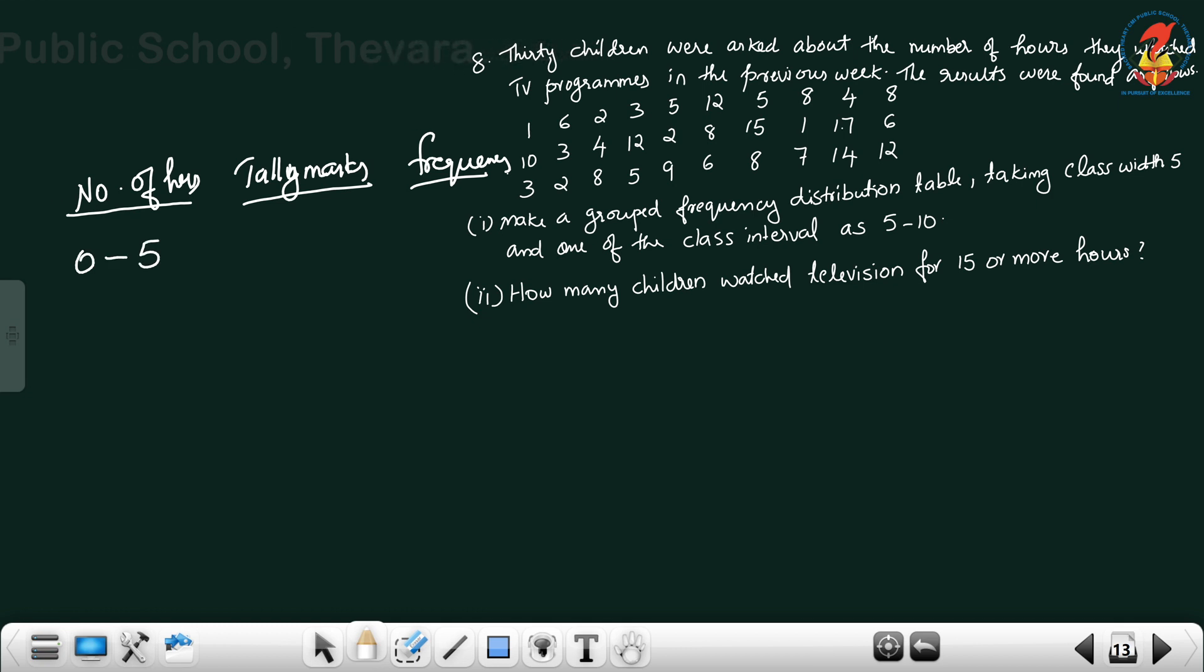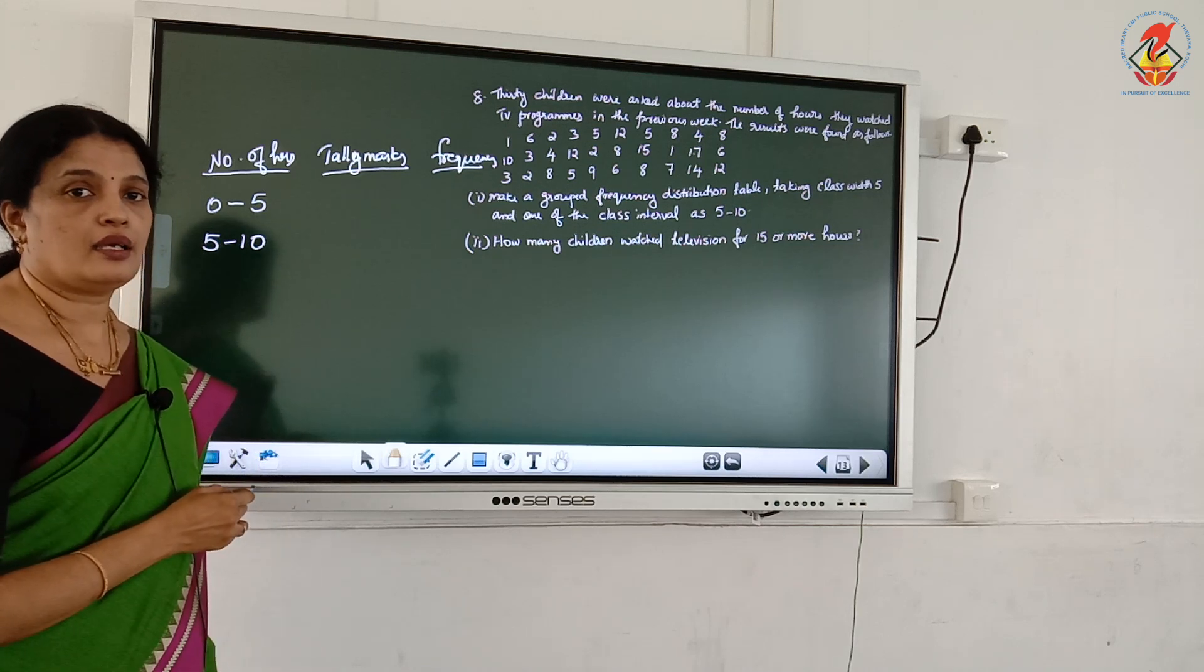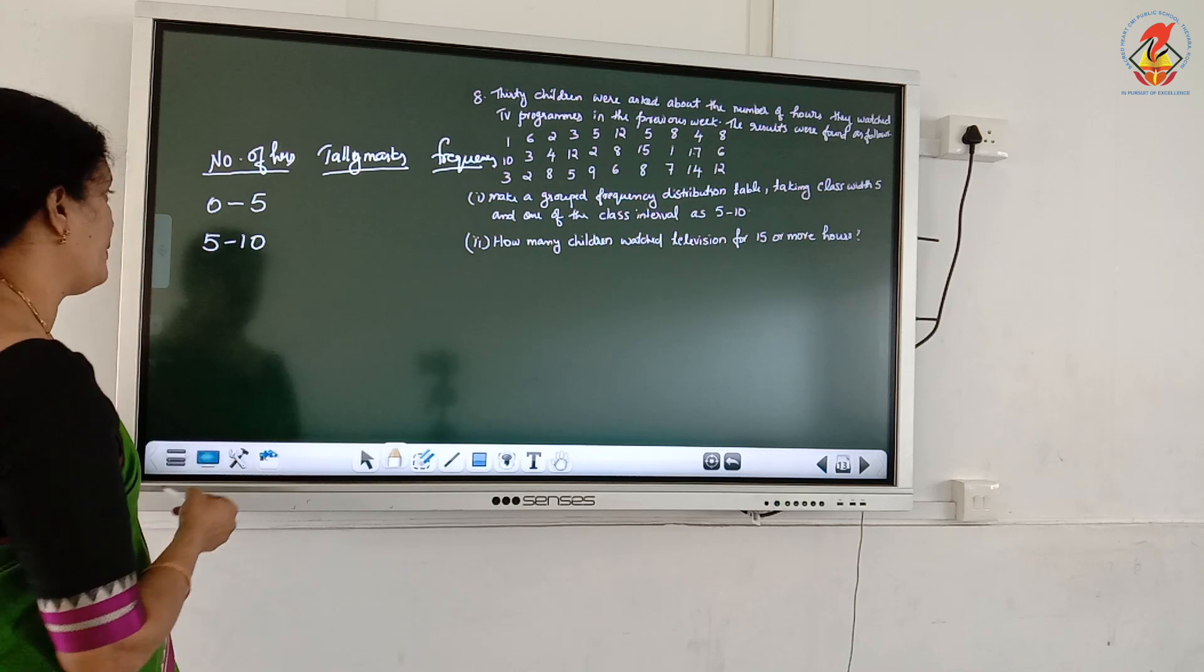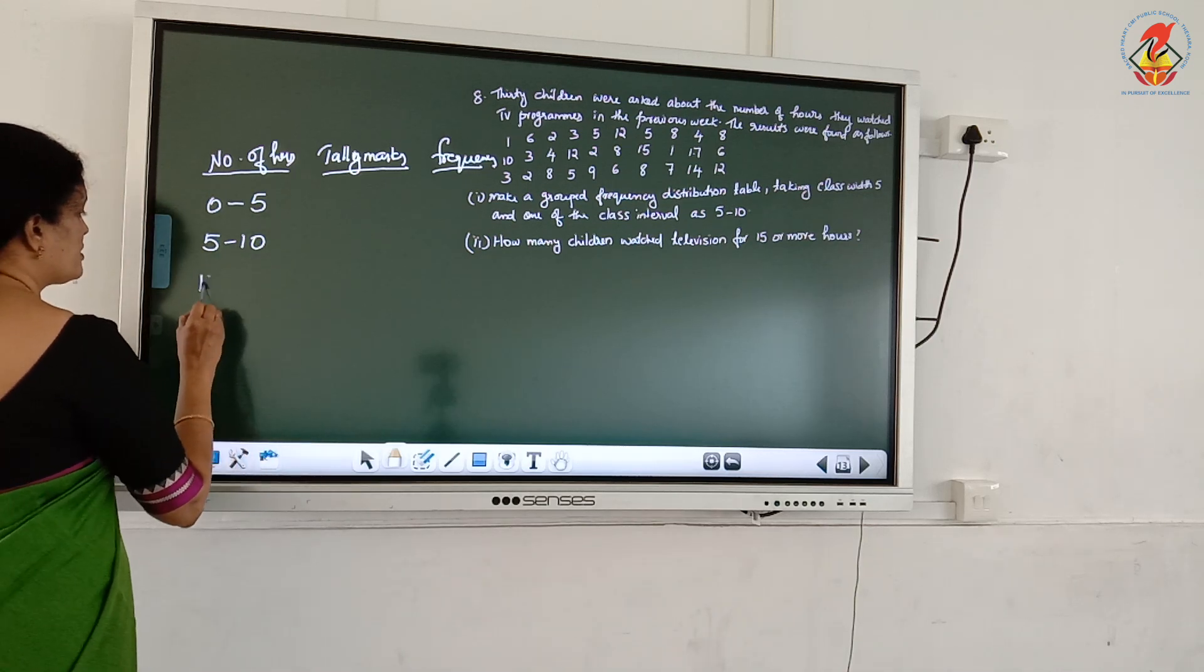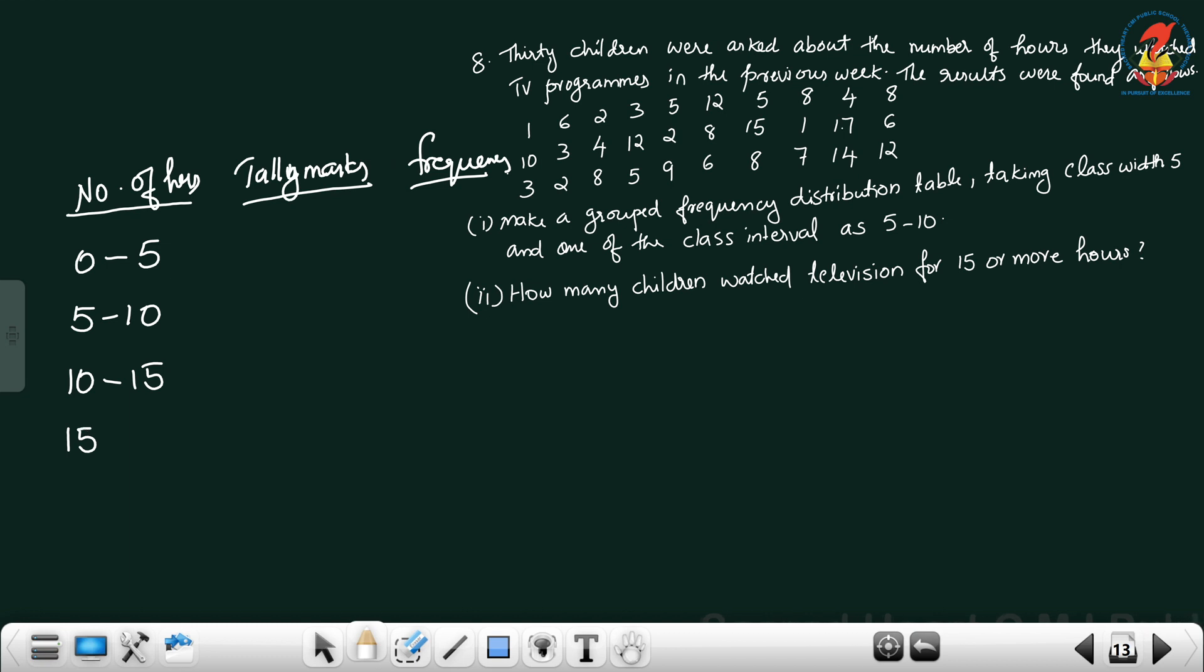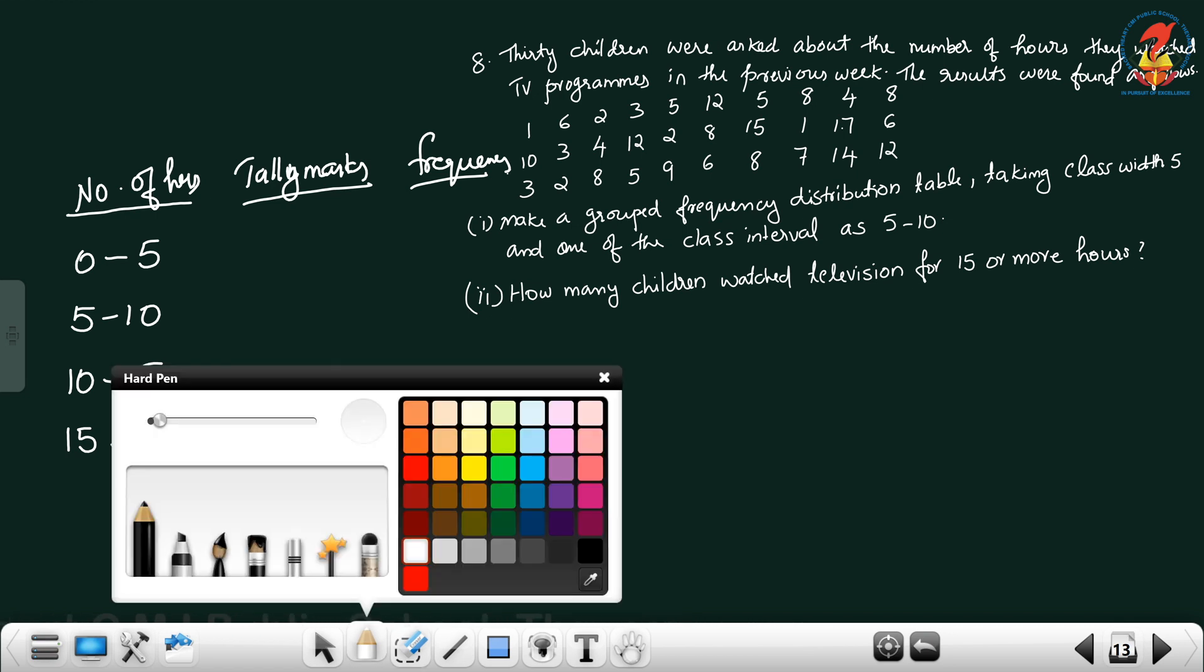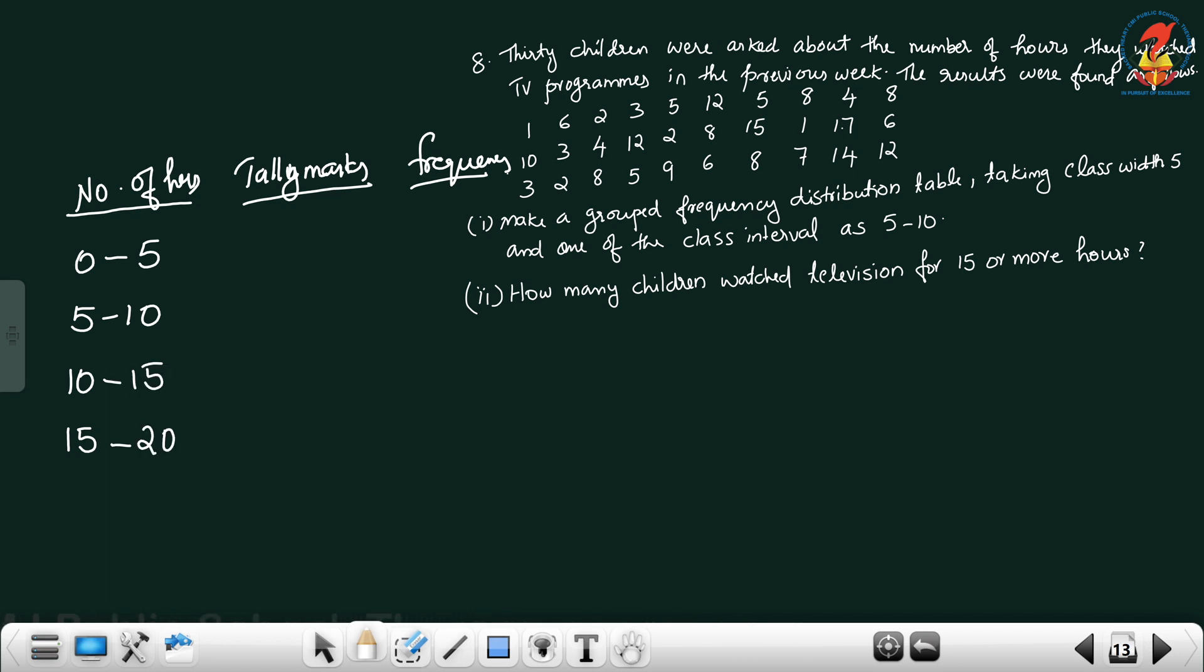0 to 5, 5 to 10. What is the class width? 5. How can you calculate the class width? Class width equals upper limit minus lower limit, 5 minus 0 equals 5. Then class width equals 5. 5 to 10, next is 10 to 15, next is 15 to 20. What is 15 to 20? No need till 20 now, till 20.